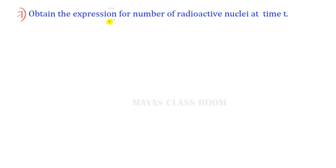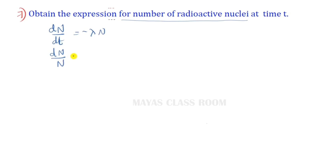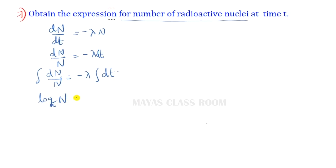The next question: obtain the expression for the number of radioactive nuclei at time t. From the law of radioactive decay, dN/dt = −λN. Rearranging: dN/N = −λ dt. Integrating both sides: log N = −λt + C, where C is the integration constant.